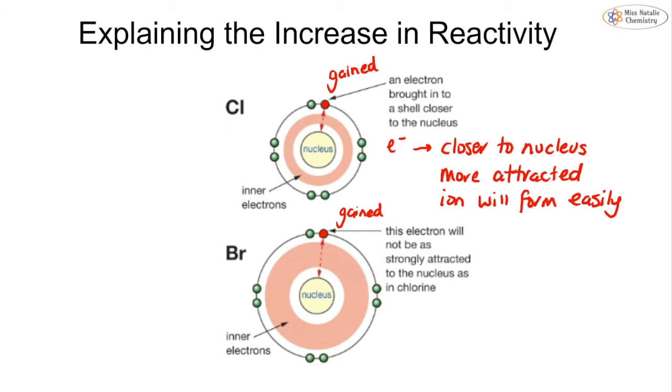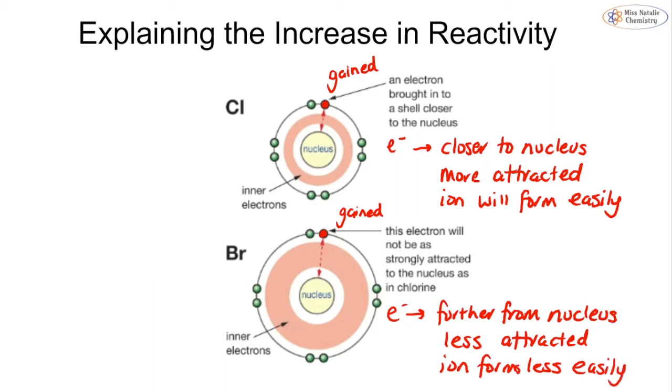So this time the electron is far from the nucleus, so it is going to be less attracted, and that means that the ion forms less easily. So chloride is going to form more easily because the electron is going to be closer to the nucleus, so that is going to be very strongly attracted. For bromide, it will still form but it's not going to be as strongly attracted.